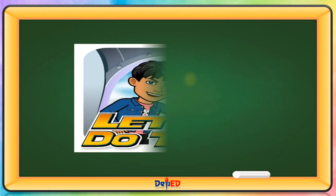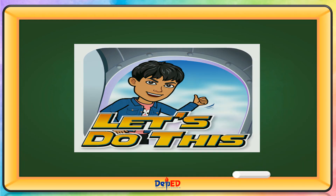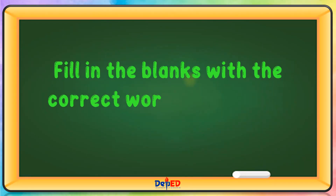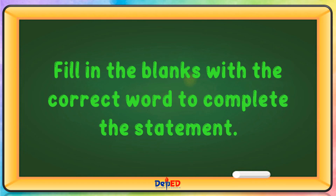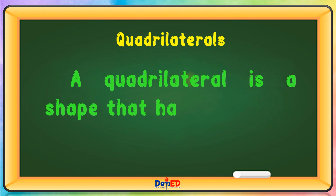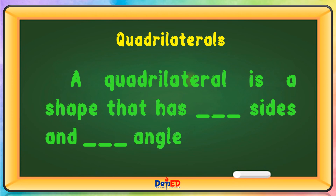Let's do this. Fill in the blanks with the correct word to complete the statement. A quadrilateral is a shape that has four sides and four angles.